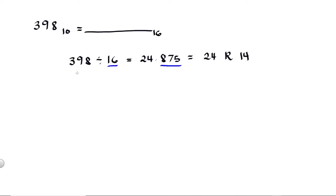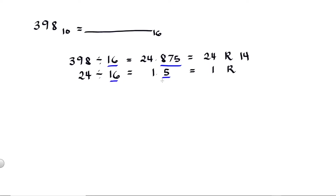Then we take 24 and divide it by 16. 24 divided by 16 is equal to 1.5, so we have 1. To get the remainder, multiply the fractional part 0.5 by 16. 0.5 multiplied by 16 is equal to 8. So we have 1 remainder 8.